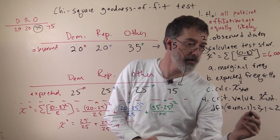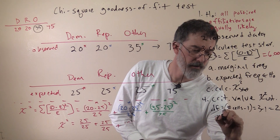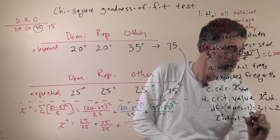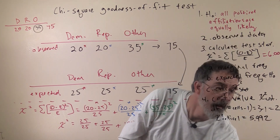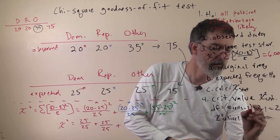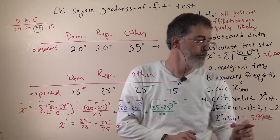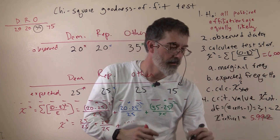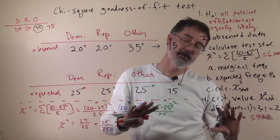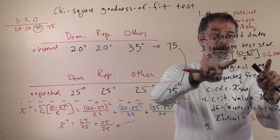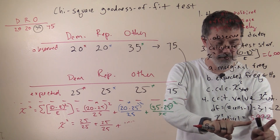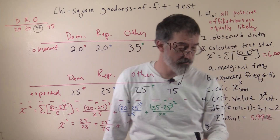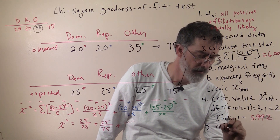With 2 degrees of freedom, you look at the table and your chi-squared critical is going to equal 5.992. Next we need to decide if we are going to reject the null hypothesis or not. We see if our test statistic is more extreme than our critical value. Here, 6 is more extreme than 5.992 — it is really close, but it is more extreme. So here we will reject the null hypothesis.